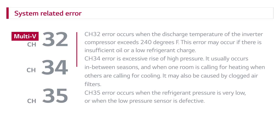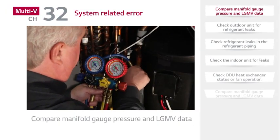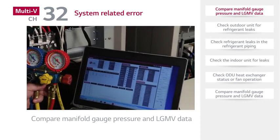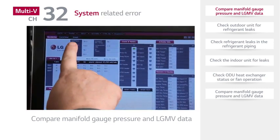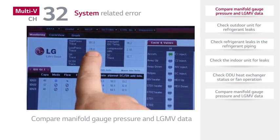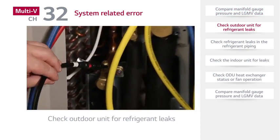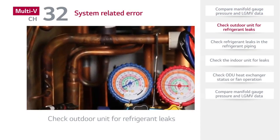CH-35 error is an error that occurs when the refrigerant pressure is very low or when the low pressure sensor is defective. Compare manifold gauge pressure and LGMV data. If there is a problem with the refrigerant pressure, inspect the outdoor unit for refrigerant leaks.